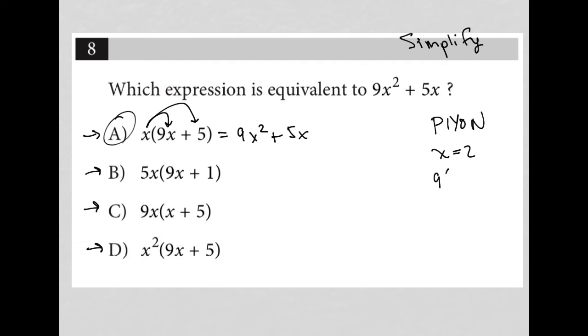then my question turns into 9 times 2 squared plus 5 times 2, in which case this becomes 9 times 4 plus 5 times 2 is 10. 9 times 4 is 36. 36 plus 10 is 46.